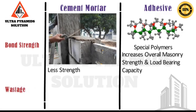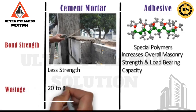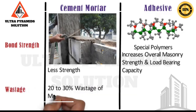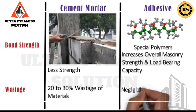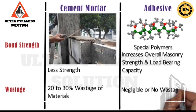Wastage: Cement sand mortar accounts for 20–30% of wastage during its use. Whereas, in case of AAC block adhesives, there is negligible or no wastage during its use.